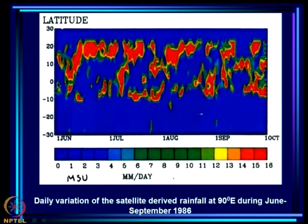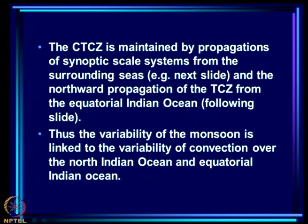The cloud band gets generated in the equatorial Indian Ocean and moves northward. The organized convection system over the monsoon zone is maintained by genesis and propagation of systems over the surrounding seas — both the Bay of Bengal, Arabian Sea, and the equatorial Indian Ocean. This means the variability of the monsoon is linked to the variability of convection over the North Indian Ocean, comprising the Bay of Bengal, the Arabian Sea, and the equatorial Indian Ocean.